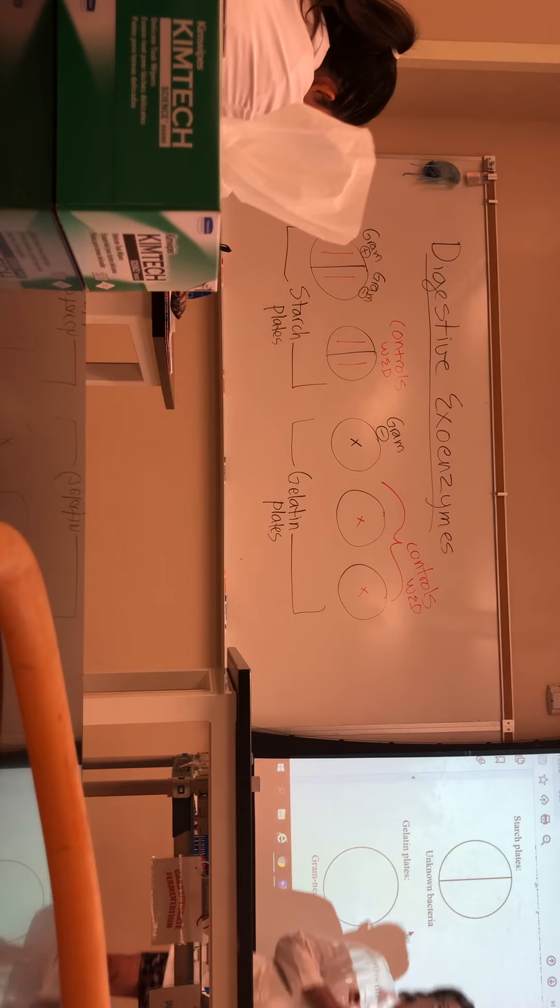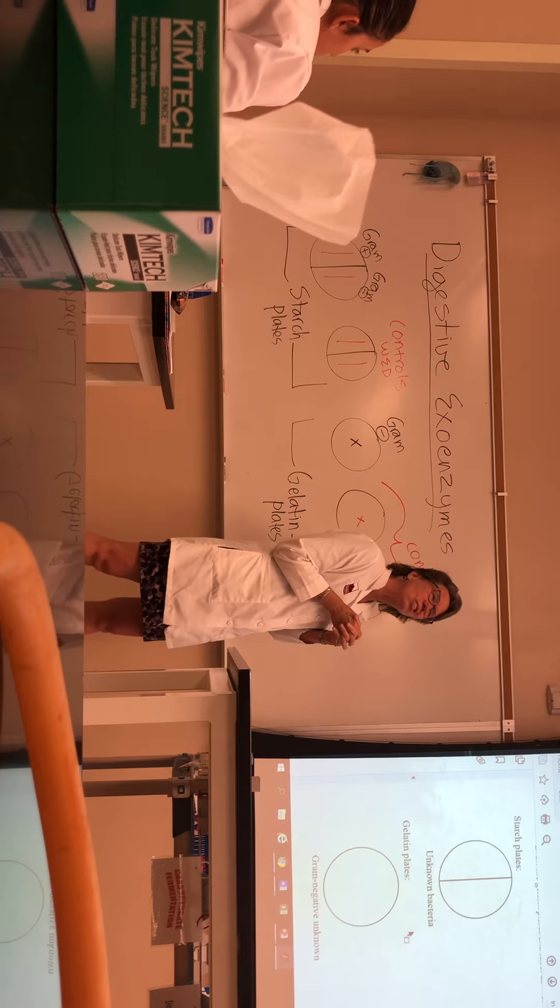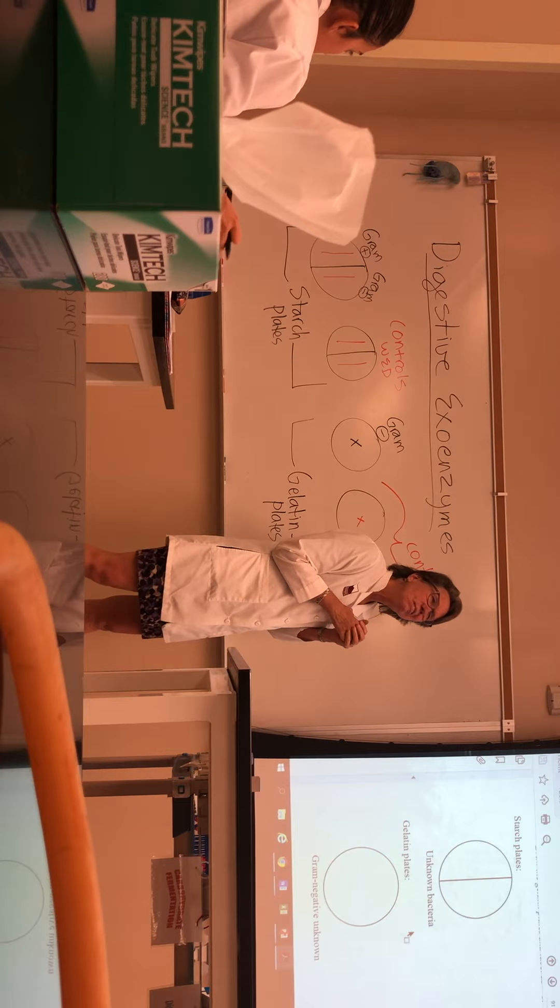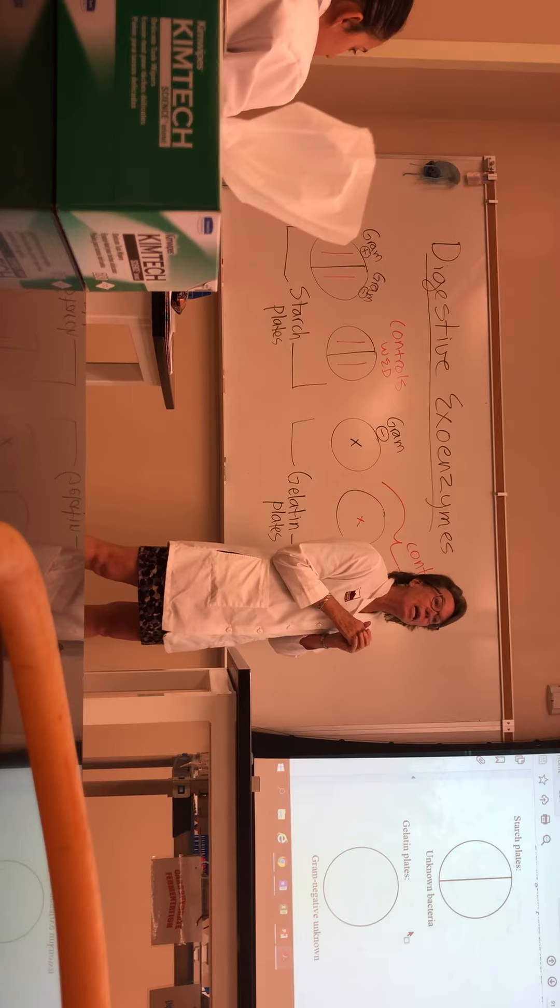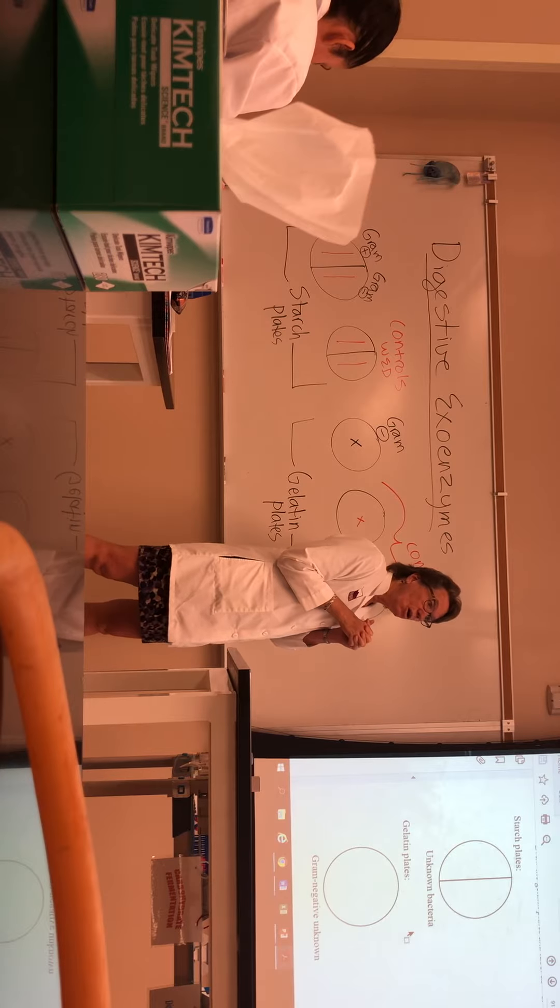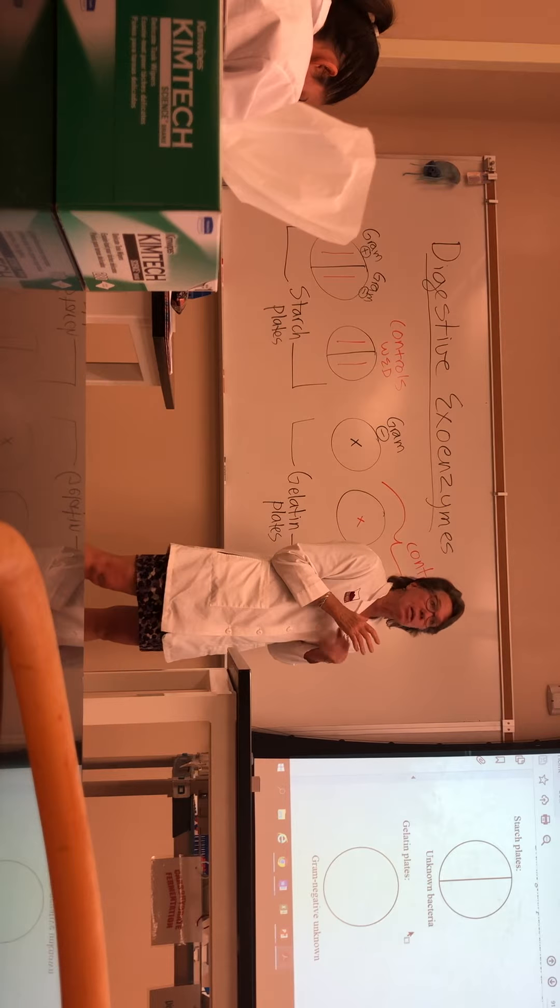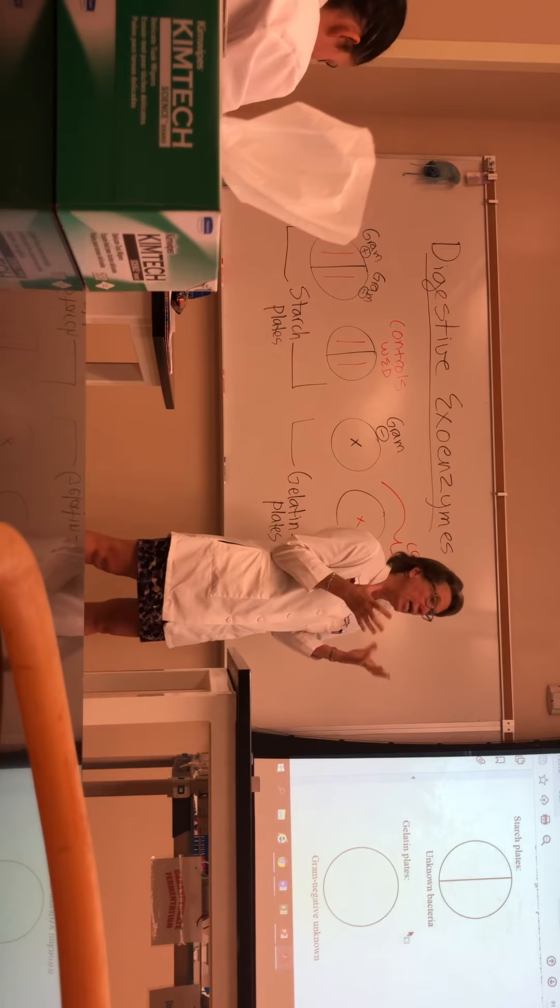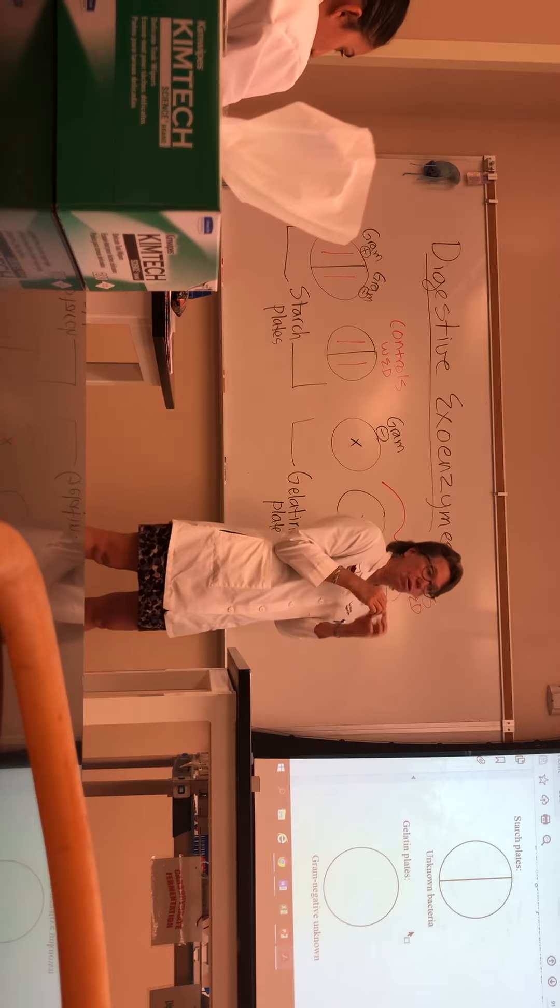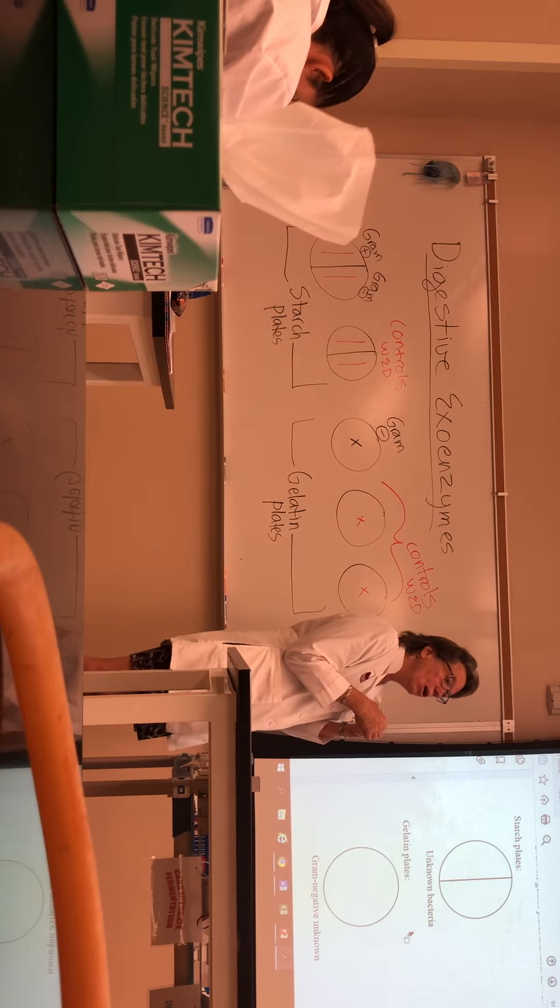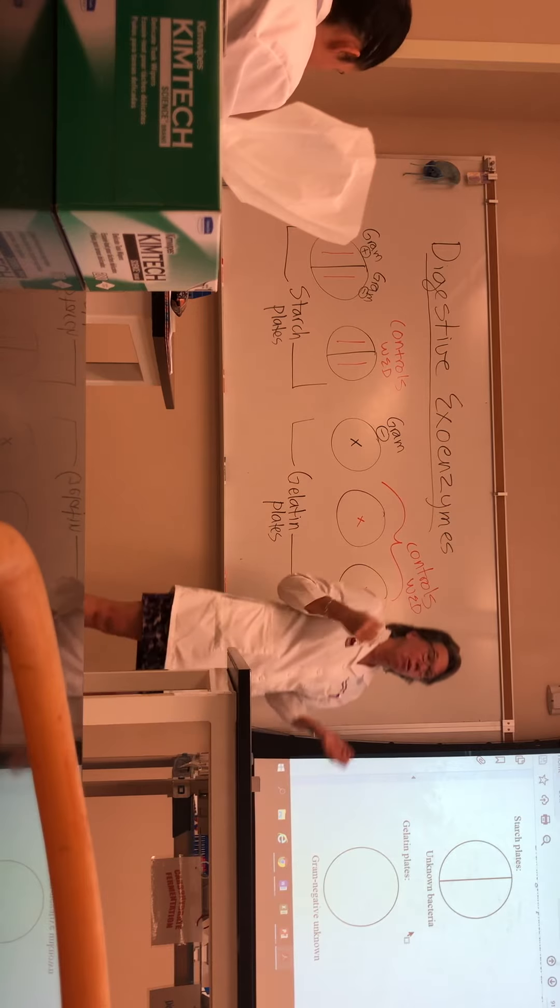So starch is a complex, what kind of macromolecule is starch? Carbohydrates. Okay, so starch is a complex carbohydrate. So if you're watching your carbs, you try not to eat a lot of bread and pasta and potatoes and stuff, because all that is starch, which is simply a whole lot of sugars all linked together in long, complex molecules. So a complex carbohydrate has lots of those simple sugars linked together in long chains.